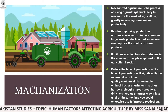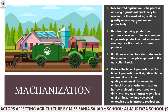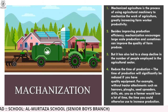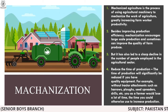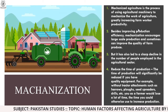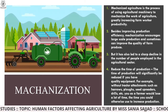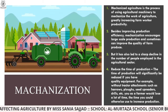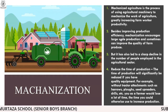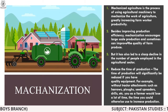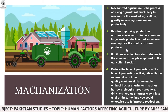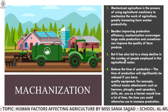Coming towards mechanization: mechanized agriculture is the process of using agricultural machines to mechanize the work of agriculture, greatly increasing farm work productivity. You are using machines to cultivate land more quickly compared to manual labor. Besides improving production efficiency, mechanization encourages large-scale production and can sometimes improve the quality of farm produce.